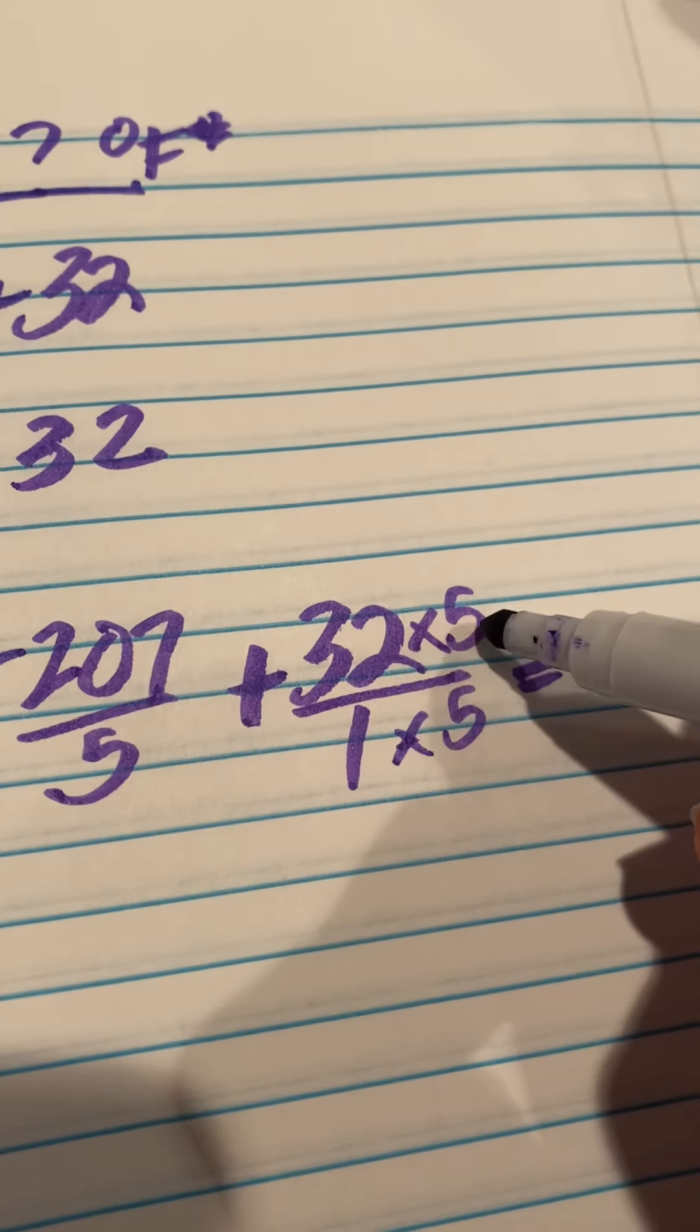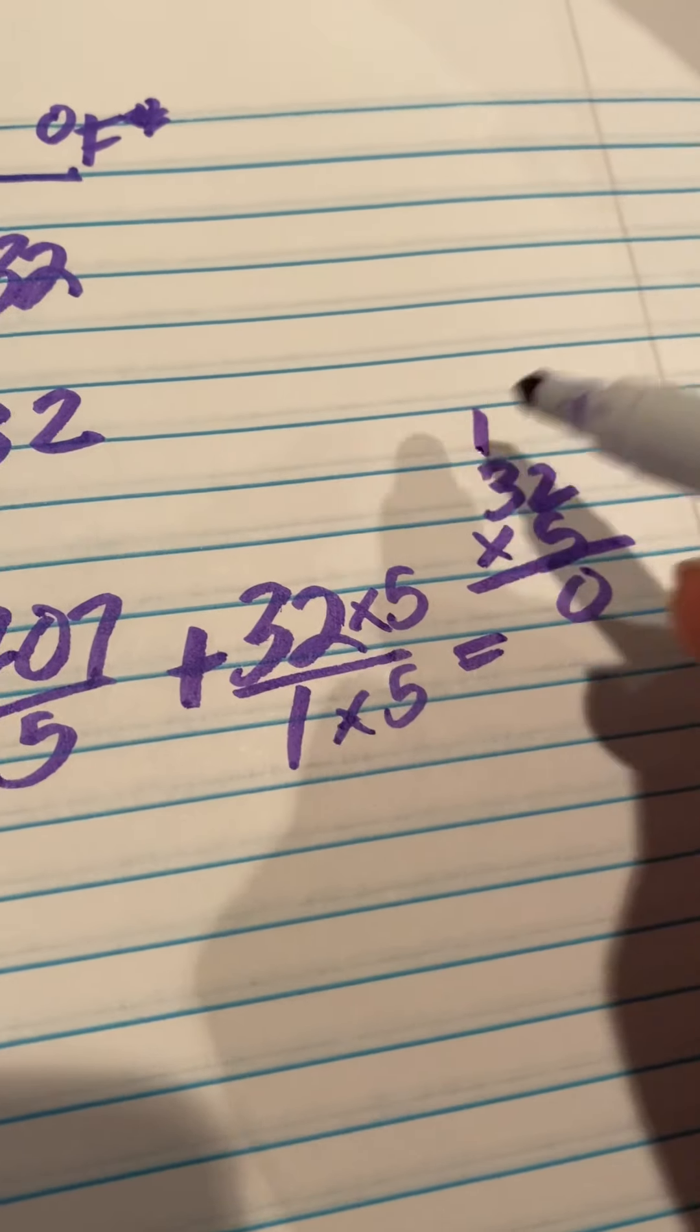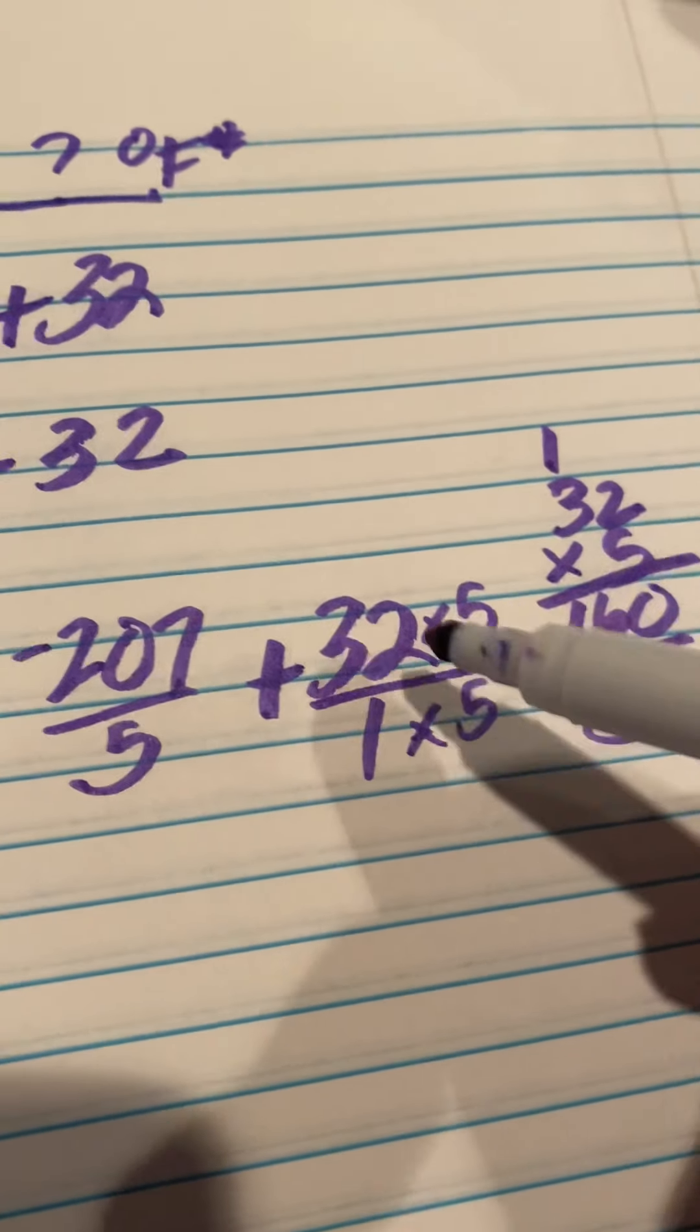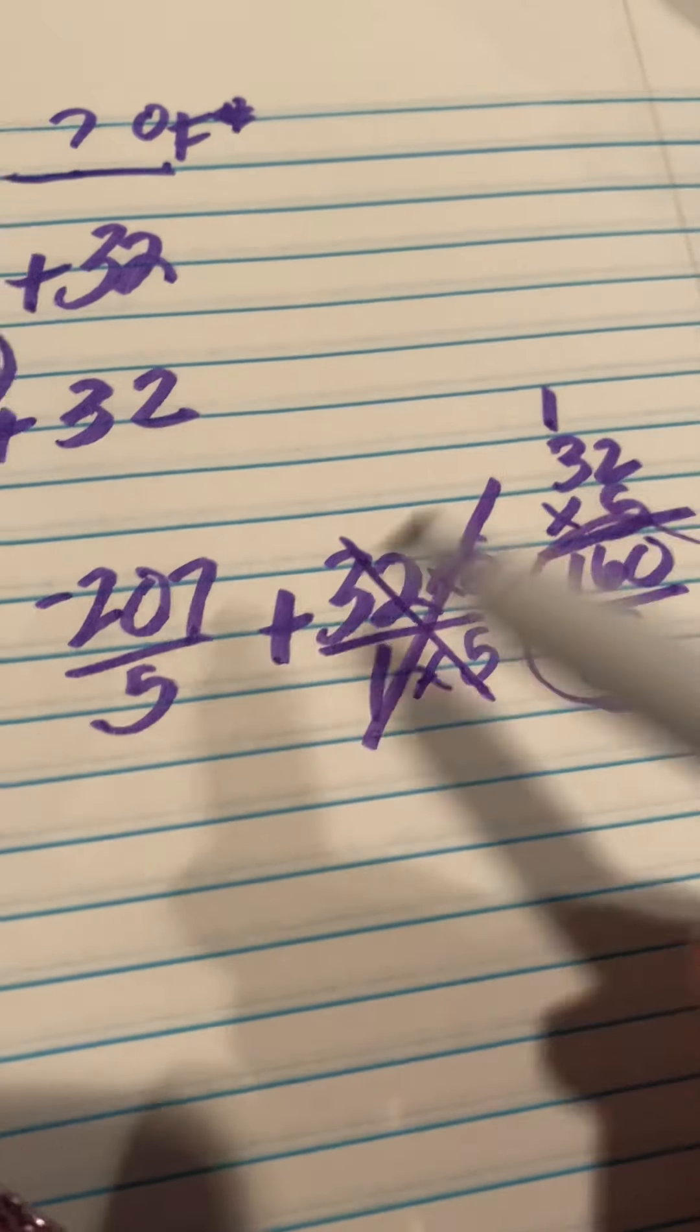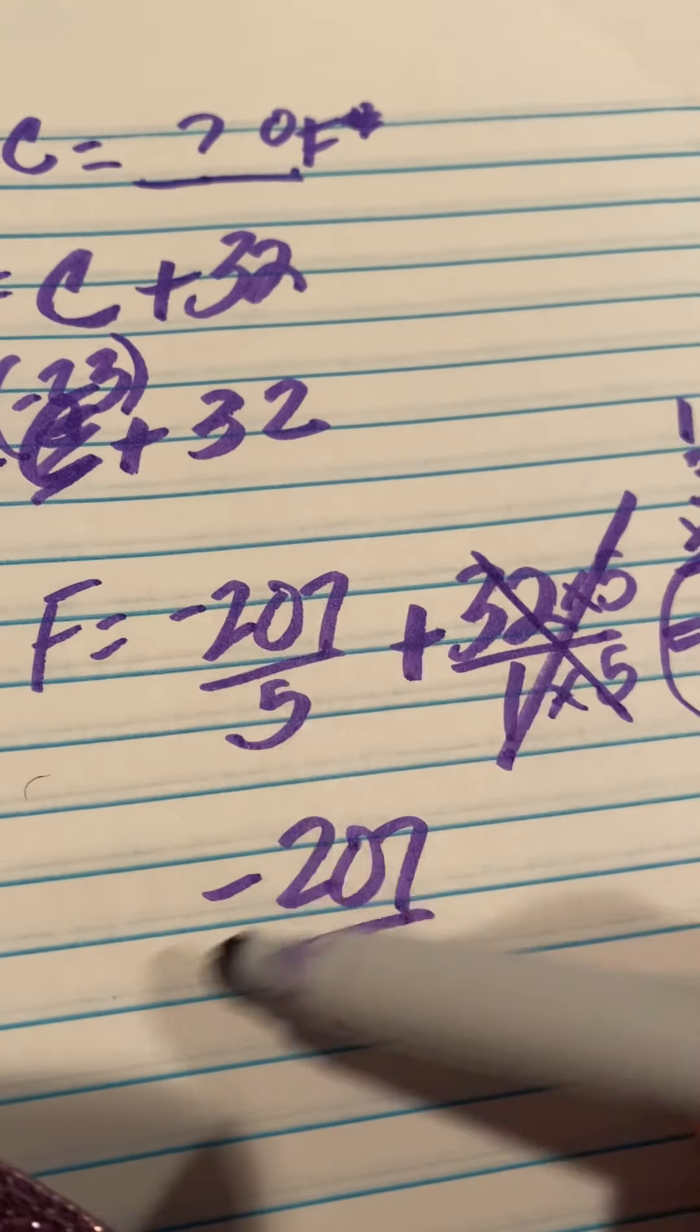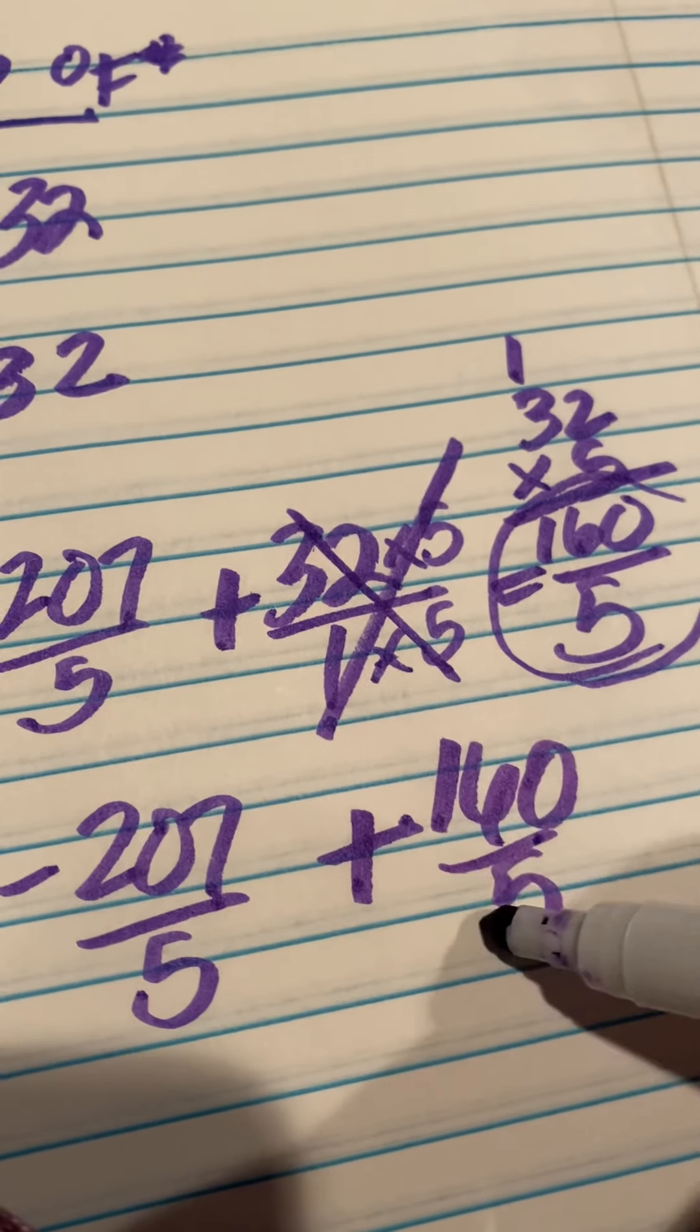Let me quickly work that out. 2 times 5, 32 times 5 will be 2 times 5 is 10. Carry the 1. 3 fives are 15. Plus 1 is 16. And then we put that over 5. So now instead of having this, I have this number. So once again, we'll write that down. That didn't change. There it is. F equals negative 207 over 5 plus 160 over 5 now.